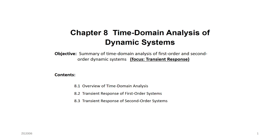How do we analyze dynamic systems? There are two types of analysis. The first one, which is in Chapter 8, is the time domain analysis. The time domain analysis focuses on the transient response of your dynamic system — the transient response means the first few seconds where the response is changing with respect to time. The other type of analysis, which we'll start in Chapter 9, is called the frequency domain analysis, and it focuses only on the steady state solution. We'll talk about that when we reach Chapter 9.